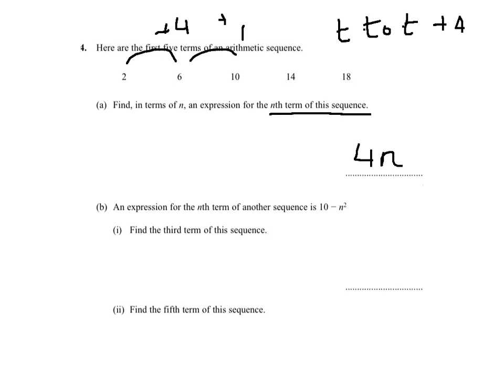So, we have 4n. When we do multiples of 4, we get 4, 8, 12, 16 and 20.